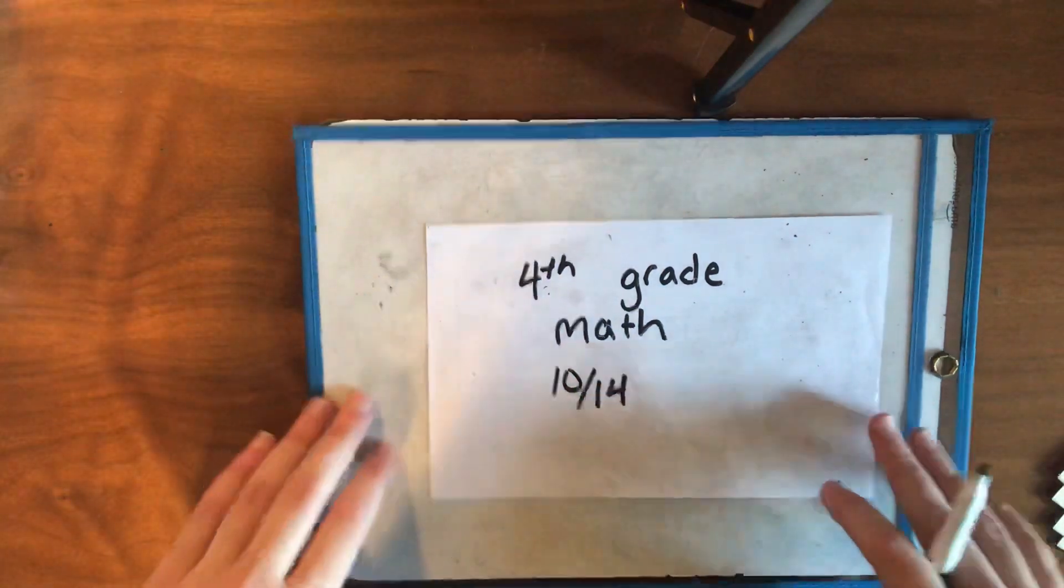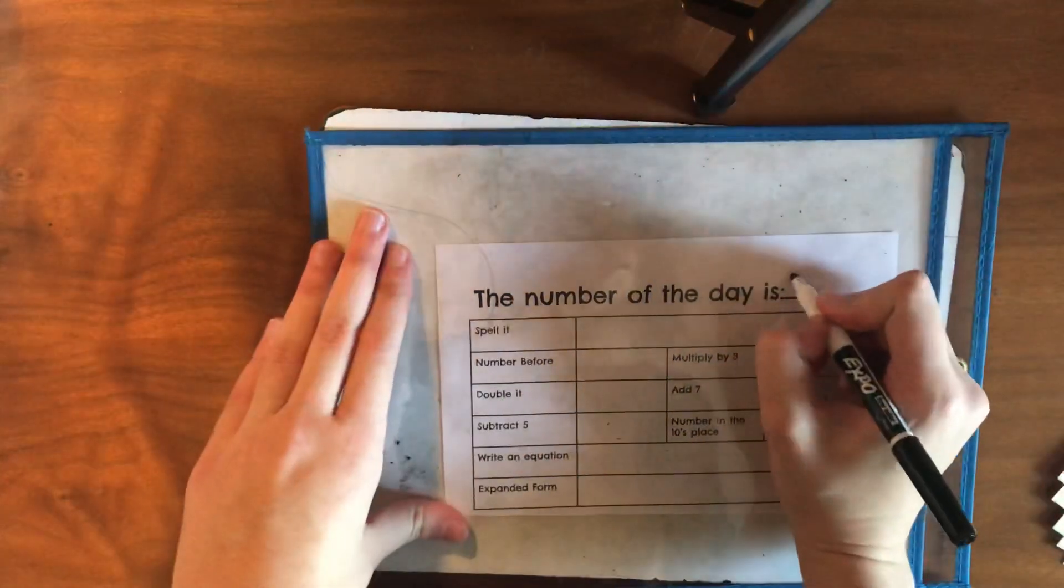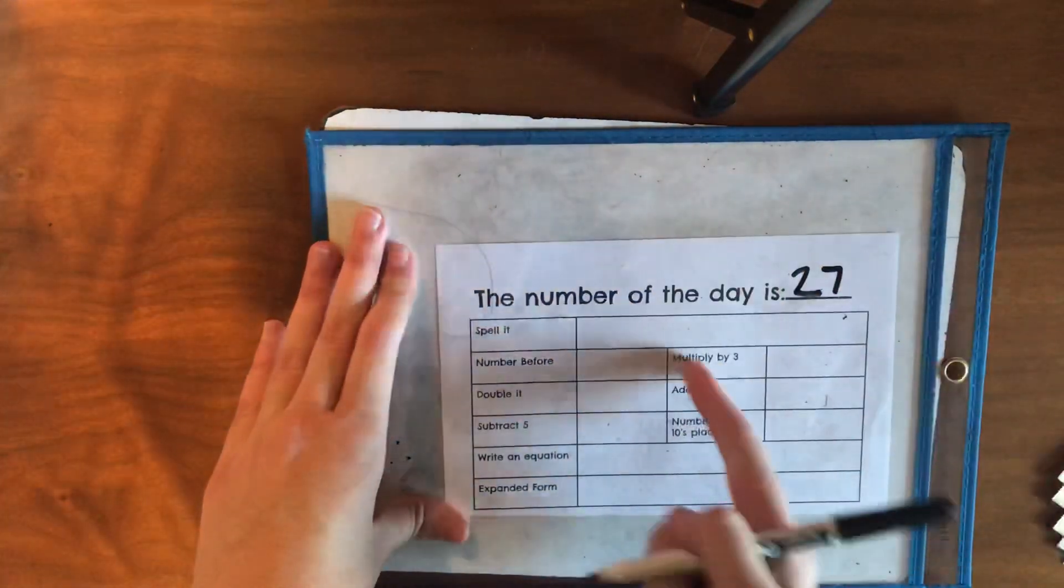Hey fourth graders, happy Wednesday. Today we're going to start out with the number of the day and the number of the day today is 27. So answer these questions to fill in the number of the day.